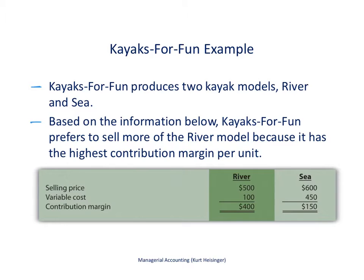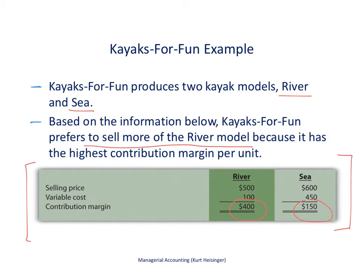Here's an example. Kayaks for Fun produces two kayak models: the river model and the sea model. Based on the information in this chart, Kayaks for Fun prefers to sell more of the river model because the contribution margin per unit is $400, which is higher than the sea model's contribution margin per unit of $150. However, this does not factor in any constraints the company might have with their resources, such as labor hours or machine hours.